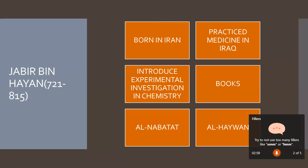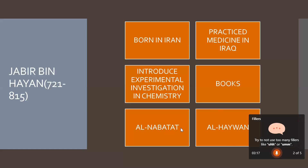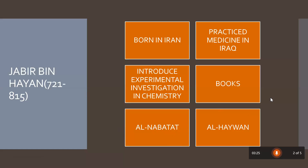If it comes in short, you can write short answers — like write a short note on Jabir bin Hayyan, or write a short note on Bu Ali Sina. In MCQs, you will be asked about their books. You have to practice this in both short and long answer formats.